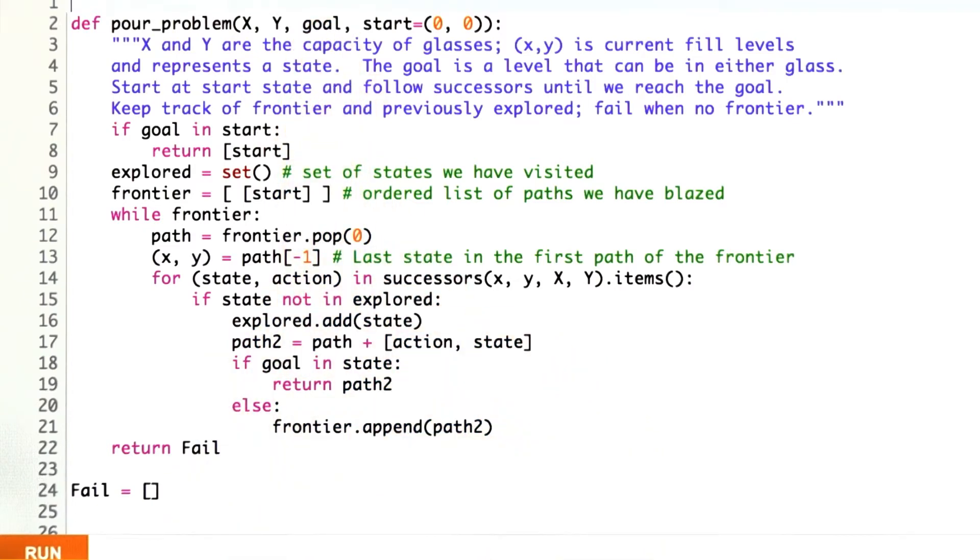Then the goal, which is going to be an integer like 6, to say that's how much I'm trying to get to, and that can be in either one of the glasses. Then the start state, which I'm defaulting to 0 and 0, saying both glasses have current level 0, but if you wanted you could generalize the problem and pass in something else as what we're starting with.